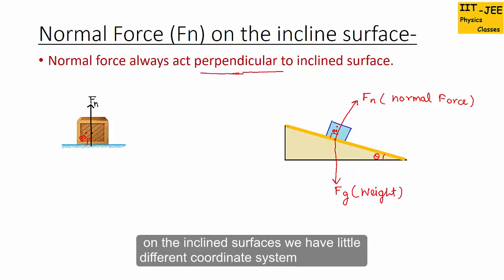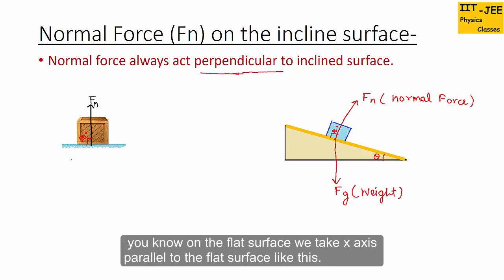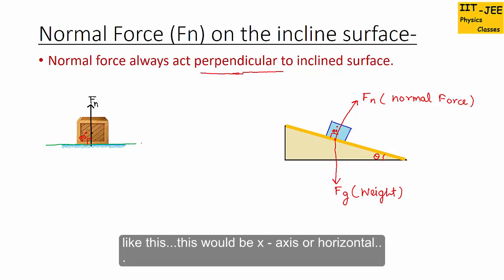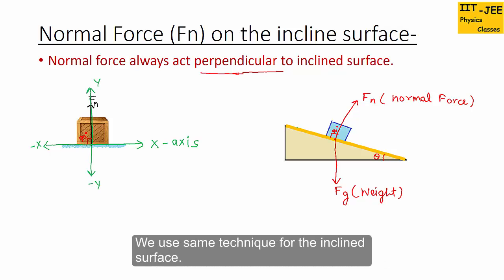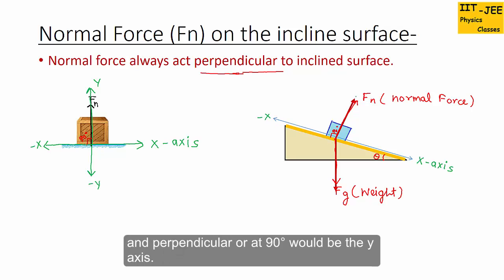On inclined surfaces we use a slightly different coordinate system. On a flat surface we take the x-axis parallel to the flat surface and the y-axis perpendicular to it. We use the same technique for the inclined surface: parallel to the inclined surface is the x-axis, and perpendicular — at 90 degrees — is the y-axis.